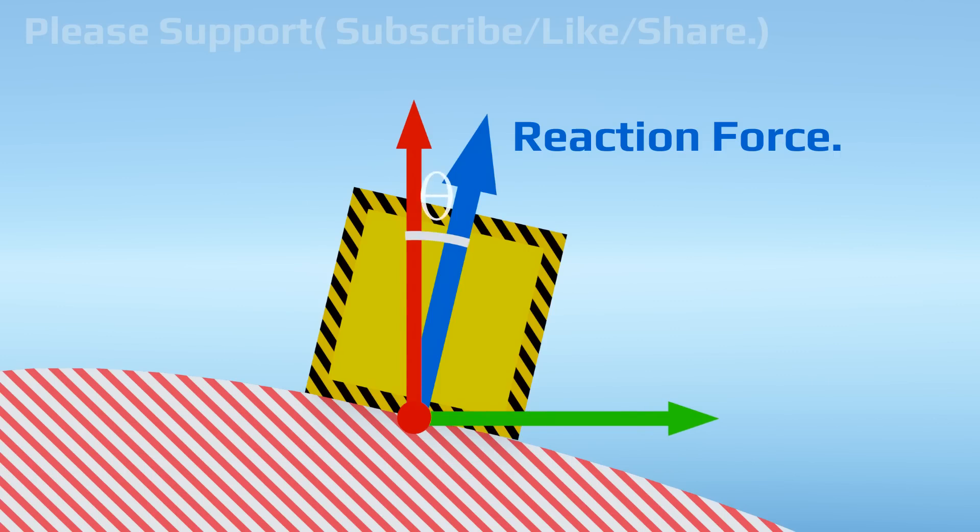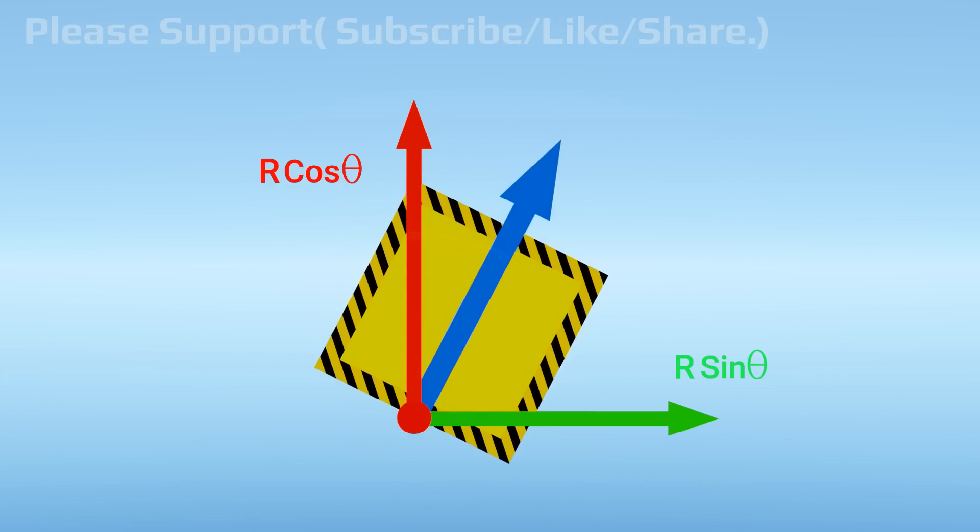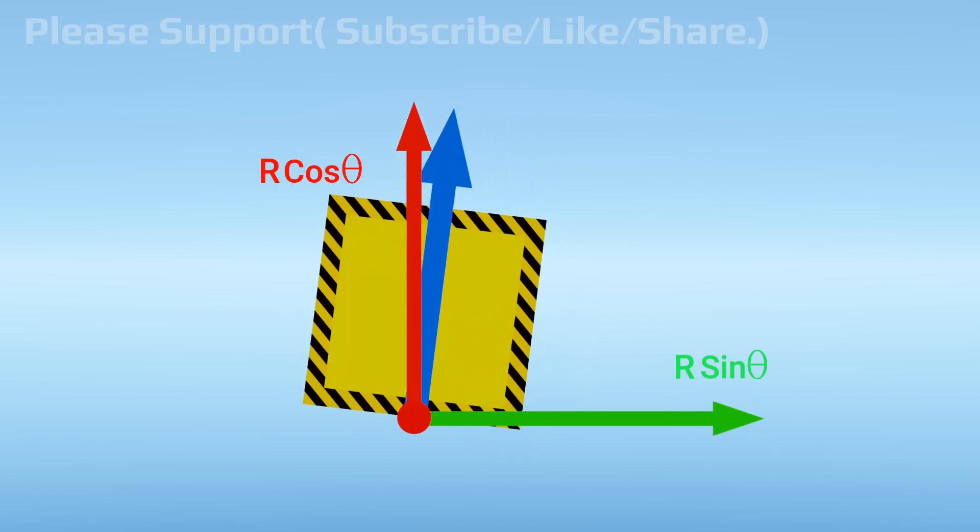If this angle is theta, then vertical force component is R cos theta and the horizontal component is R sine theta. If this slope angle changes, the theta value will change too. If angle increases, the R sine theta value will increase too. Conversely, if angle is reduced, then R sine theta value will decrease.